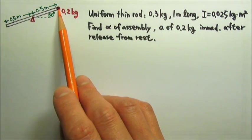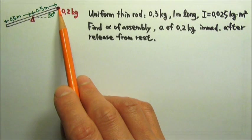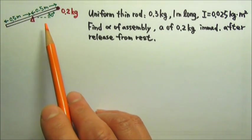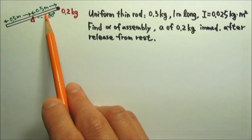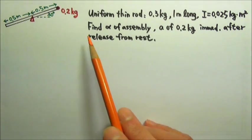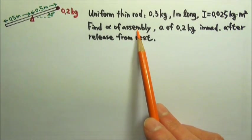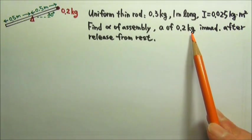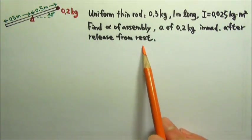A small 0.2 kg mass is attached to one end of the rod, and then the assembly is released from rest at a 30-degree angle above the horizontal. Find the angular acceleration of the assembly and the acceleration of the 0.2 kg mass immediately after the release from rest.